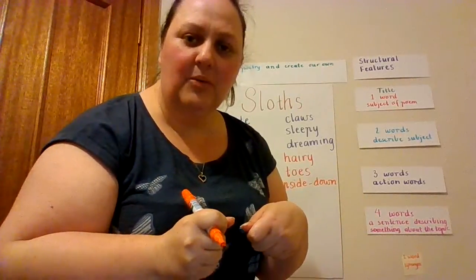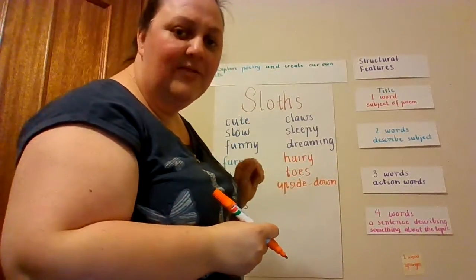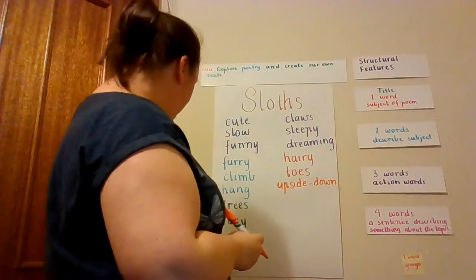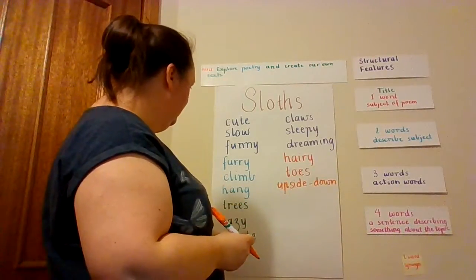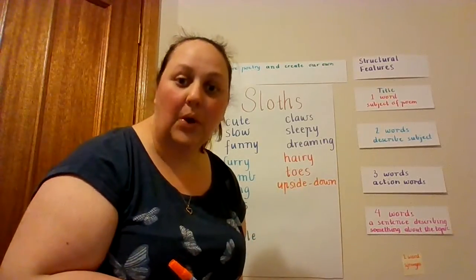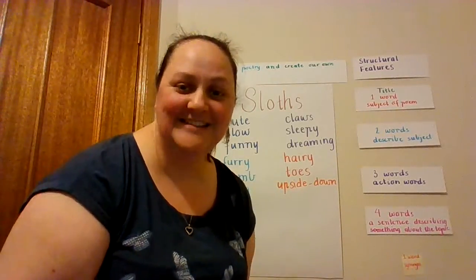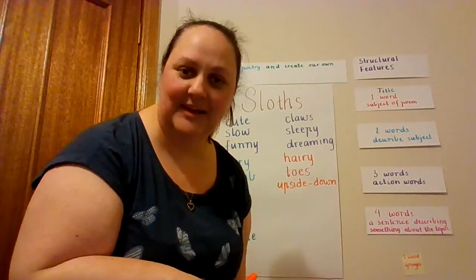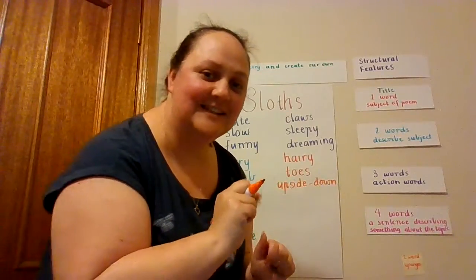The next part of my vocab list I'm going to combine with a word that I already have. I have the word trees. So I'm actually going to write 'leaf' and then 'munching' because I'd like to put that in my sentence.